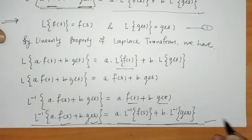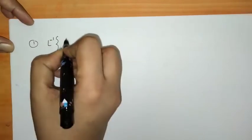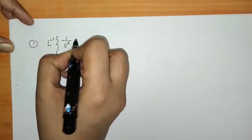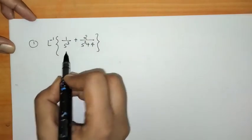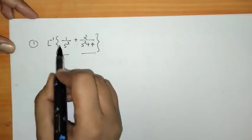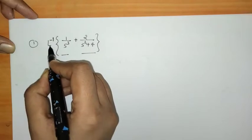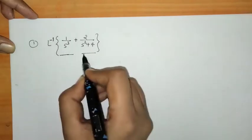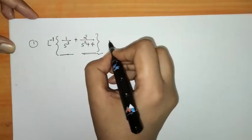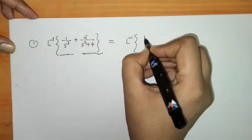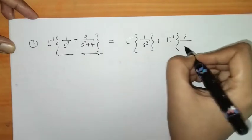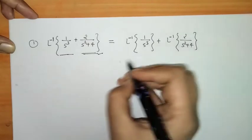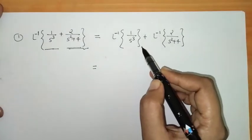Now to understand this property we look at some examples. If we have to find L⁻¹{1/s³ + 2/(s²+4)}, we can see there are two functions. So we operate L⁻¹ separately on each: L⁻¹{1/s³} + L⁻¹{2/(s²+4)}.